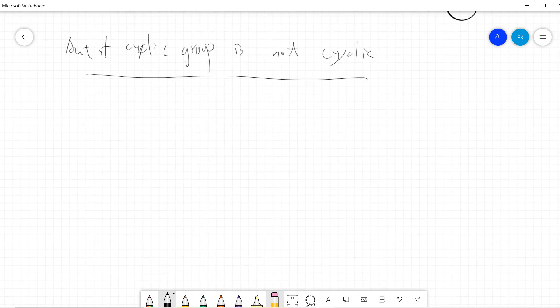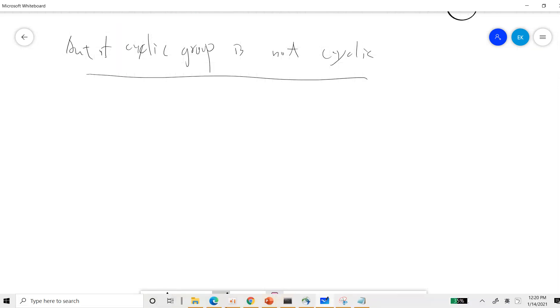And the interesting fact is that... Okay, so there is an interesting fact that I proved in my other videos. The interesting fact is that the automorphism of G, if the automorphism of G is cyclic, then G is abelian.